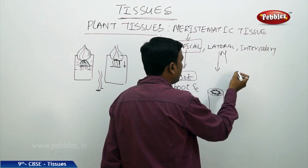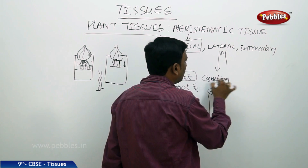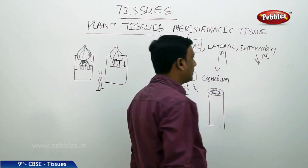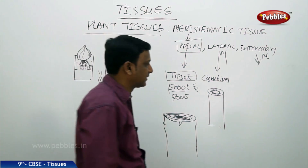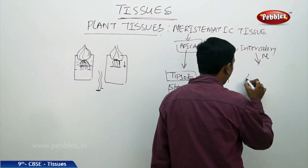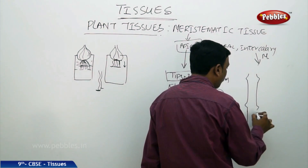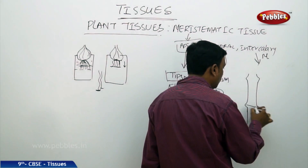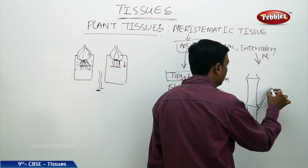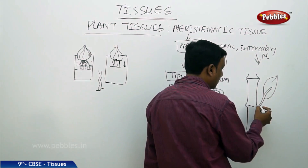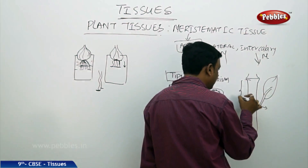The lateral meristem is found in the cambium region. The intercalary meristem is found in the internodal space — between the nodes. On the stem, nodes are points where a leaf or branch arises. Between one node and another, the intercalary meristem is found.